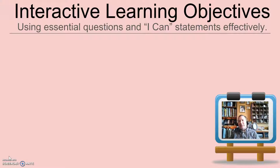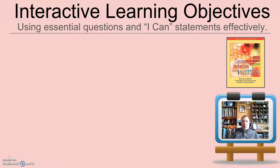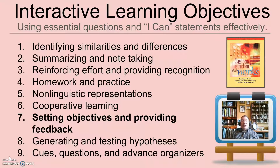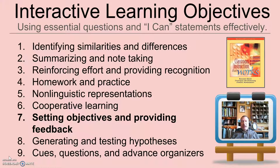Let's start with the research that backs up this idea. I always go back to my good old friend Robert Marzano, who came up with, through his synthesis of research, nine strategies that if teachers got better at doing with their students, their students would have better student achievement, especially as it pertains to standardized tests. I've highlighted number seven because that's what essential questions and interactive learning objectives are all about — setting those objectives with students and then providing feedback as we progress through the lesson or unit.